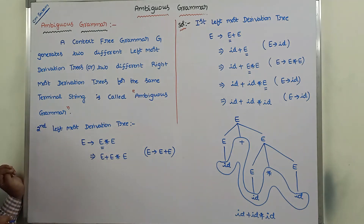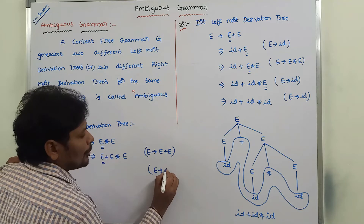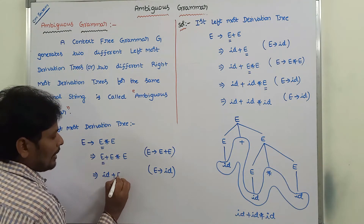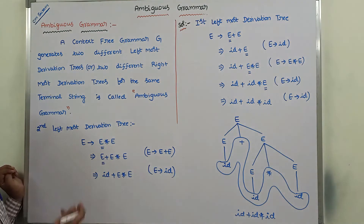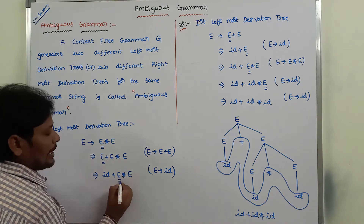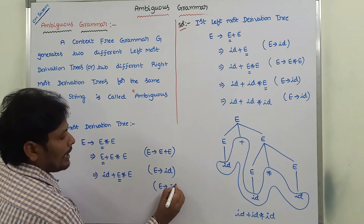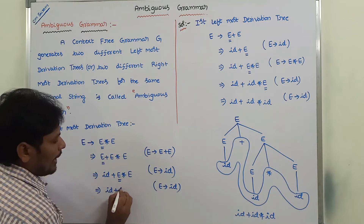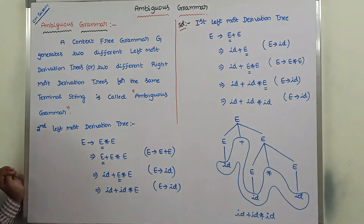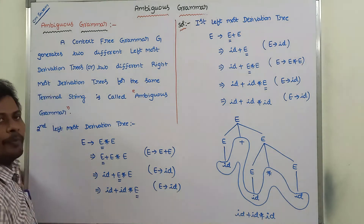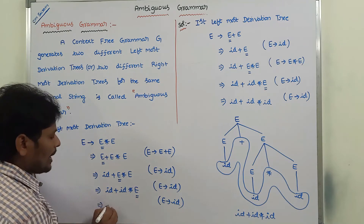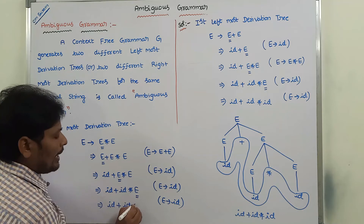So, what is the leftmost non-terminal here? This is the leftmost non-terminal. We are substituting E derives to id in the place of leftmost non-terminal E. Then we are getting id plus E star E. Next, what is the leftmost non-terminal? This is E. Now, we are substituting E derives to id in the place of the leftmost non-terminal. So, id plus id star E. Again, what is the leftmost non-terminal here? This is E. Now, again we are substituting E derives to id in the place of E. So, we get id plus id star id.